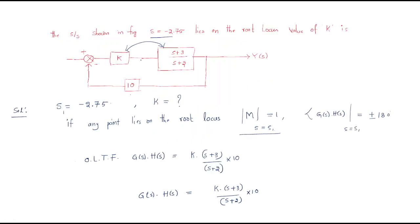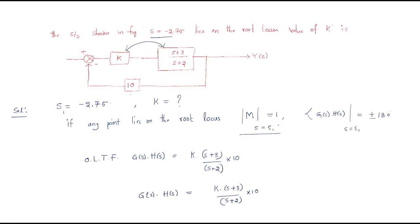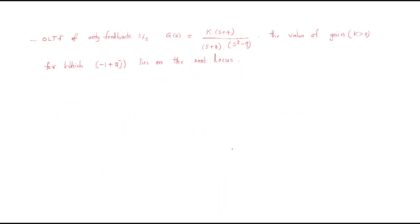This model is straightforward: the problem gives an s value and a block diagram transfer function. To handle two separate blocks, combine them into a single open loop transfer function G(s)H(s). Then apply the standard rule: any point on the root locus must have magnitude equal to 1 and phase equal to plus or minus 180 degrees.